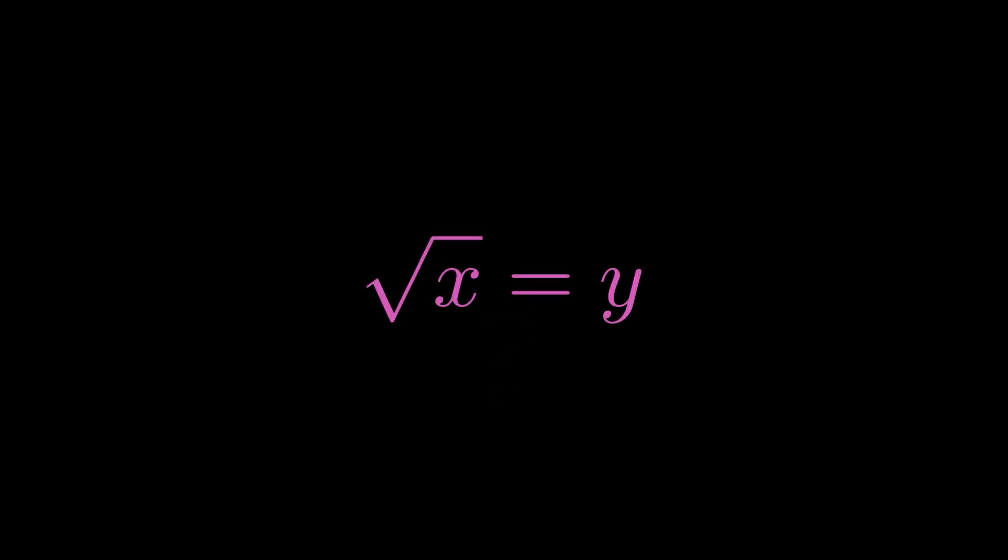First, let's start by defining the square root of x to be some number y. Looking at this equation, we know that we can actually remove the square root by squaring both sides of the equation like this.